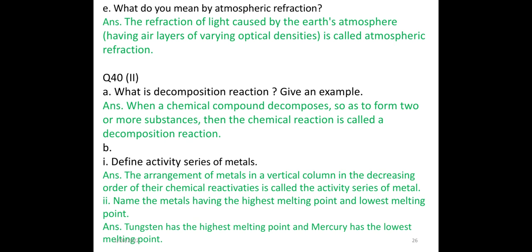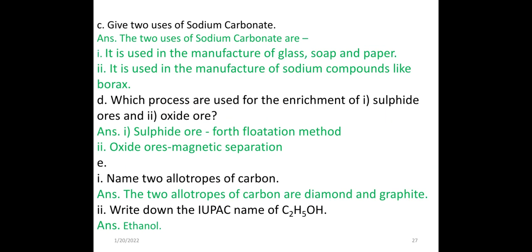Name the metal with the highest melting point and the lowest melting point. Tungsten has the highest melting point and mercury has the lowest melting point. Mercury is a liquid at room temperature and is used in thermometers. Give two uses of sodium carbonate. 1. It is used in the manufacturing of glass, soap, and paper. 2. It is used in the manufacturing of sodium compounds like borax.